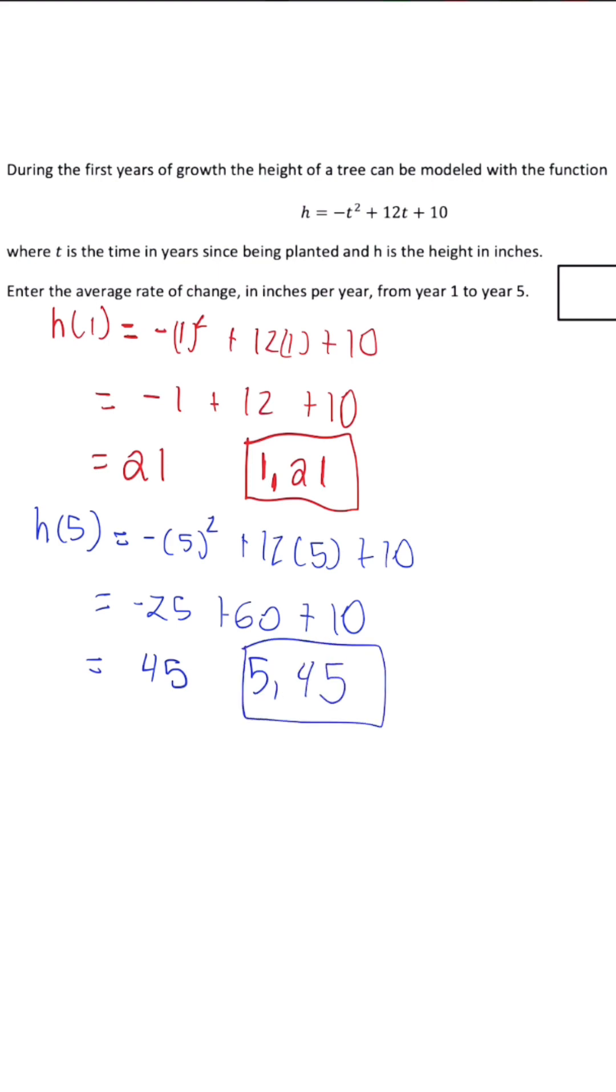Now that we have both of these pieces of information, we can now solve. So we're going to use the slope formula to get the rate of change. So now we have 45 minus 21 all over 5 minus 1.